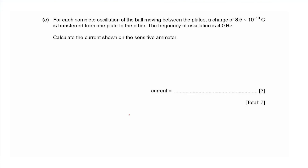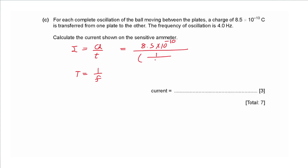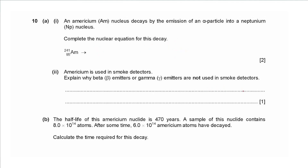Part c: for each complete oscillation a charge of 8.5 × 10⁻¹⁰ C is transferred, and the frequency of oscillation is 4 Hz. Calculate the current. Current equals charge divided by time. The periodic time equals 1 over frequency = 1/4 s. So current equals 8.5 × 10⁻¹⁰ ÷ (1/4) = 3.4 × 10⁻⁹ A.